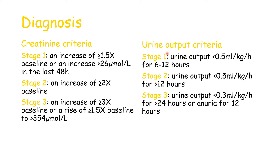Next, we have the urine output criteria. If the kidney is not producing urine, surely there's something wrong. Stage one: urine output less than 0.5 milliliters per kilogram per hour for 6 to 12 hours. Stage two if this proceeds to more than 12 hours. Stage three is a urine output of less than 0.3 milliliters per kilogram per hour for more than 24 hours, or no urine production — anuria — for 12 hours or more.